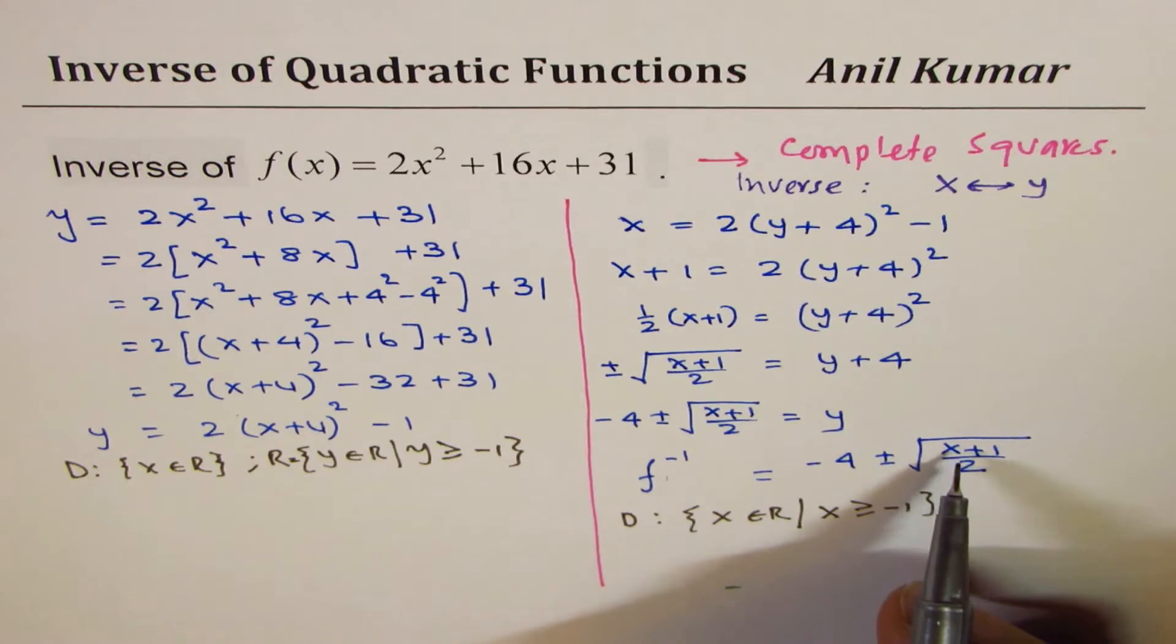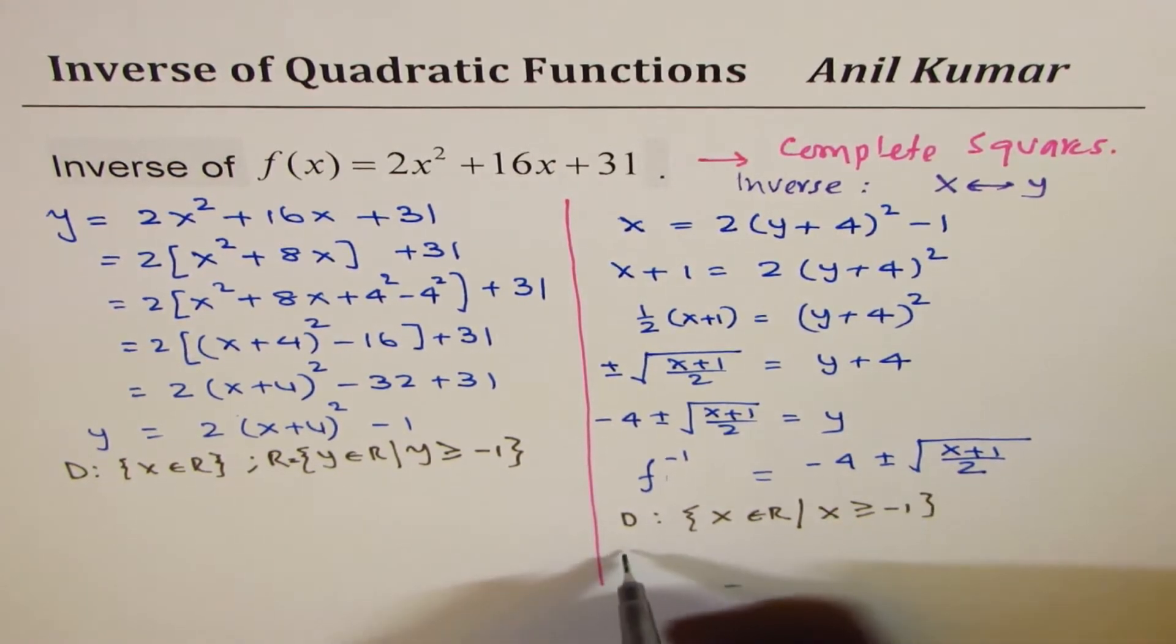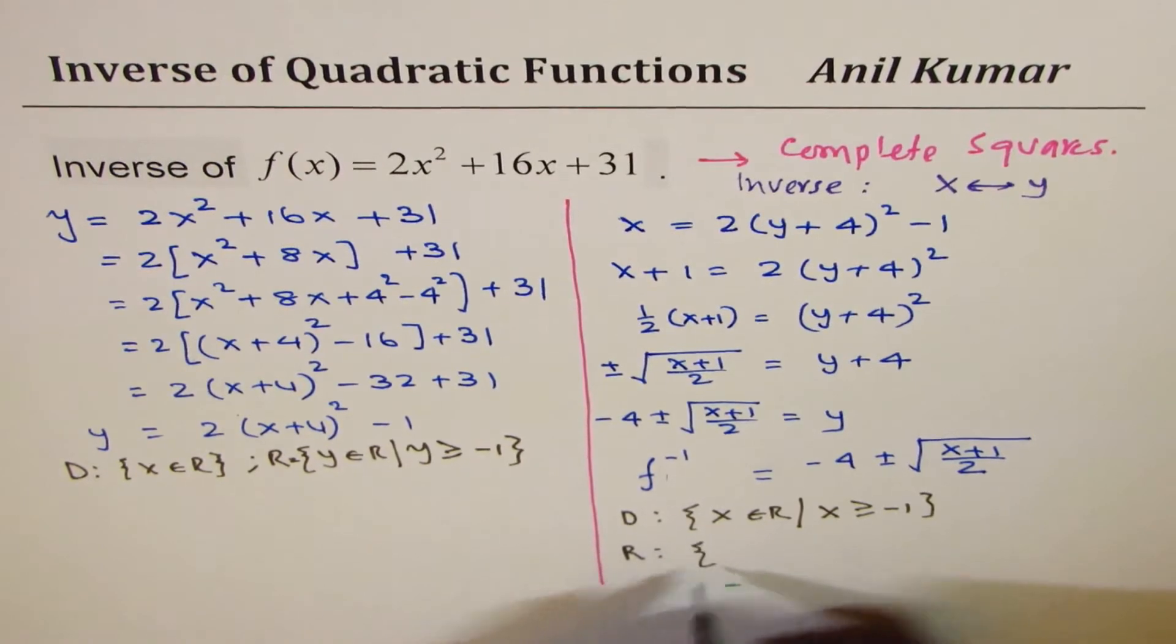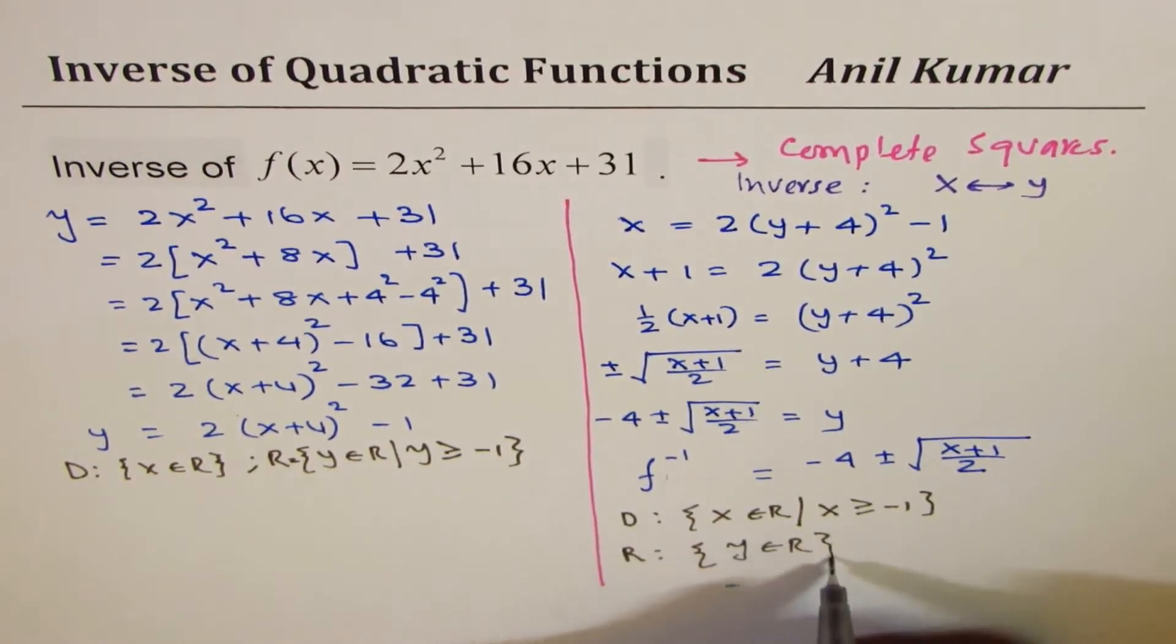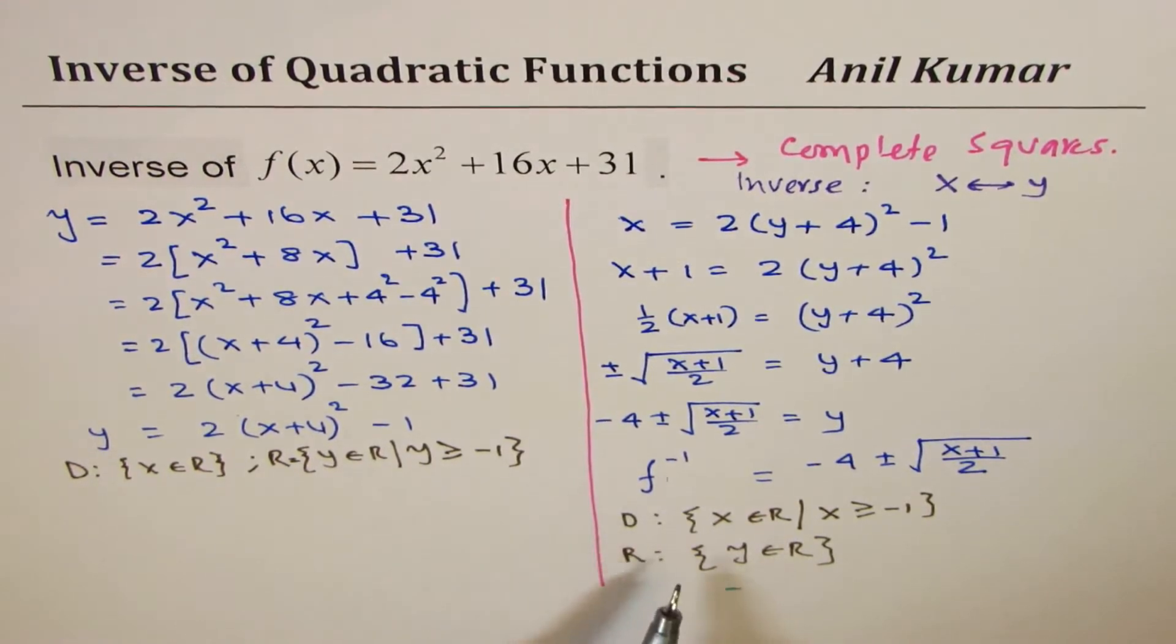x has to be greater than equals to minus 1. If it is minus 2, we get something negative in the radical, which is not possible. And the range here will be y belongs to real numbers. So, domain and range flips when you find the inverse.